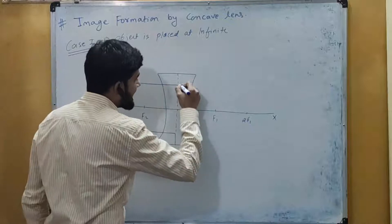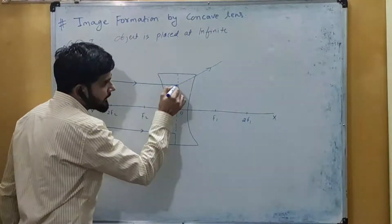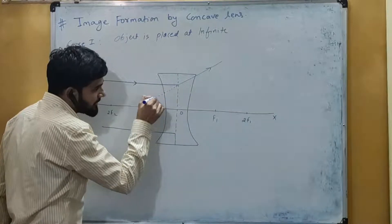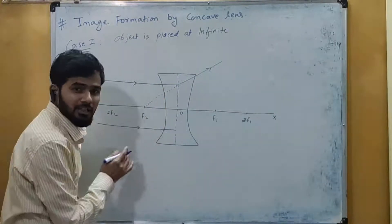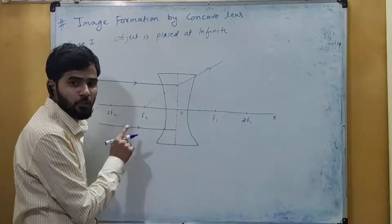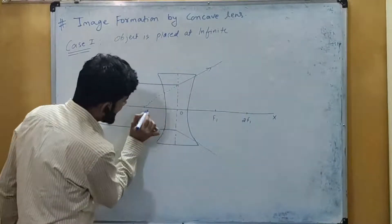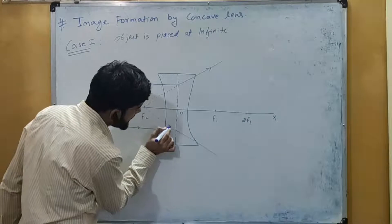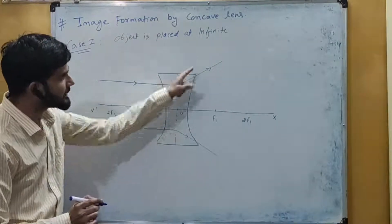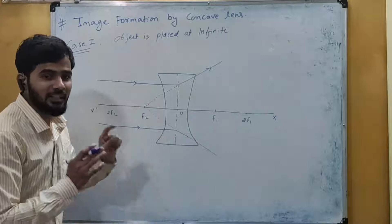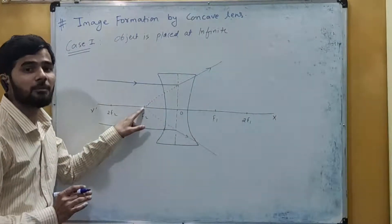So this first light ray will be refracted here, and after refraction it appears that the light ray is coming from the second principal focus. Similarly, the second light ray is also parallel to the principal axis, so after refraction it also appears that it is coming through the principal focus. You can see that both light rays, after refraction, appear to be coming from the principal focus.